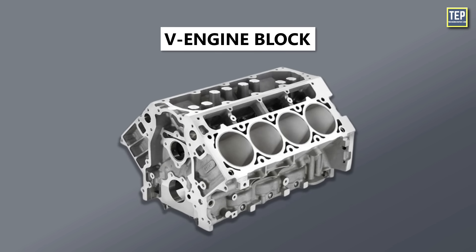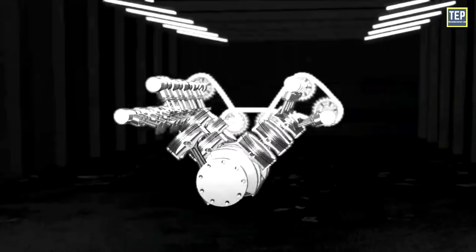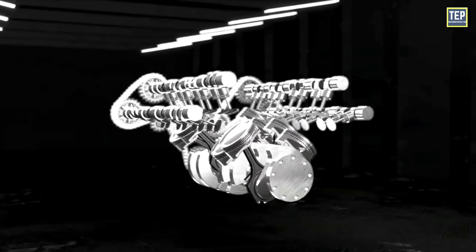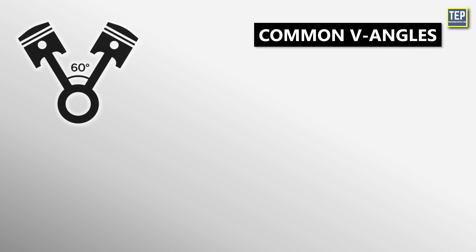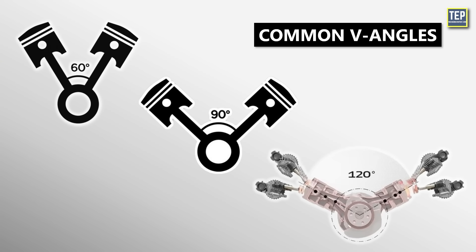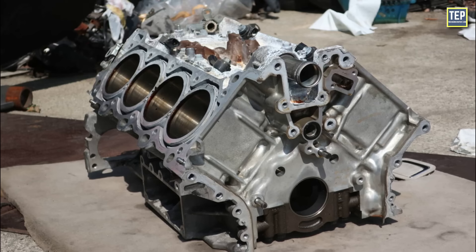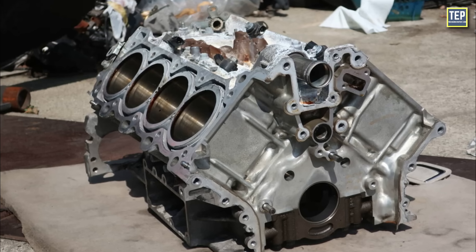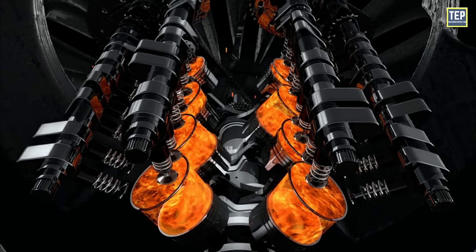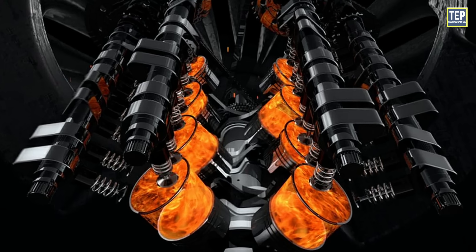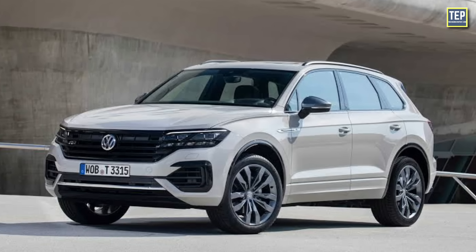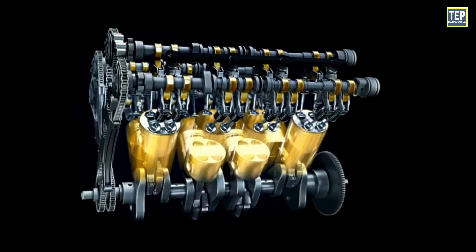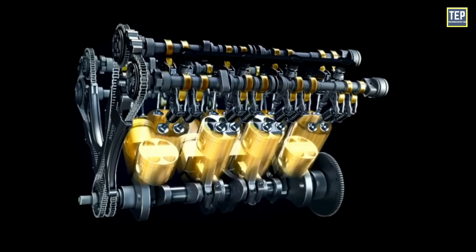V-engines have cylinders arranged in two banks at an angle to each other, forming a V-shape when viewed from the front. Common angles for V-engines are 60, 90, or 120 degrees. Such a design allows for the engine block to be made even smaller while continuing to provide room for more cylinders. These blocks are found more commonly on high-performance mid-range cars, thanks to their ability to produce a greater amount of power.